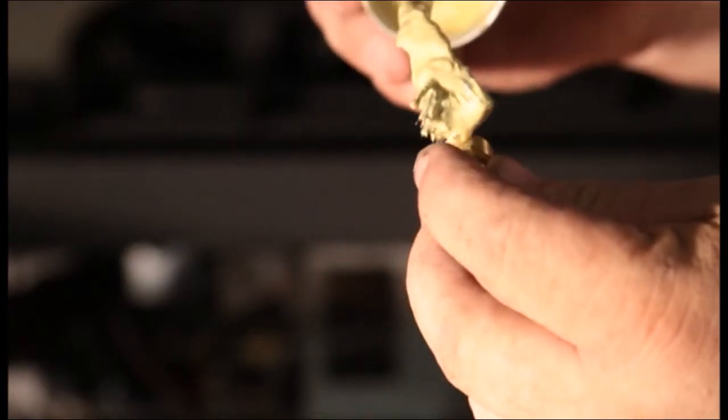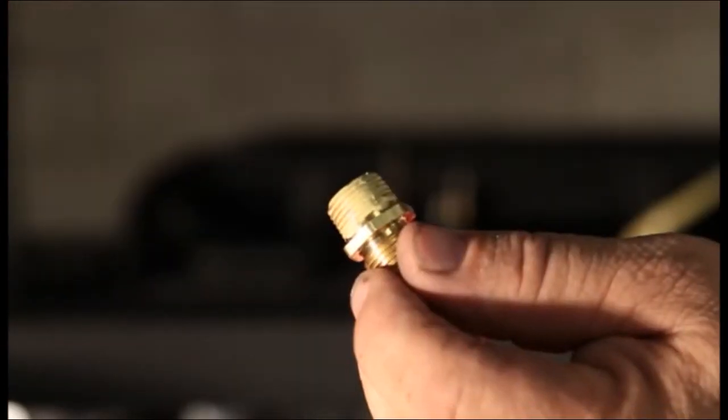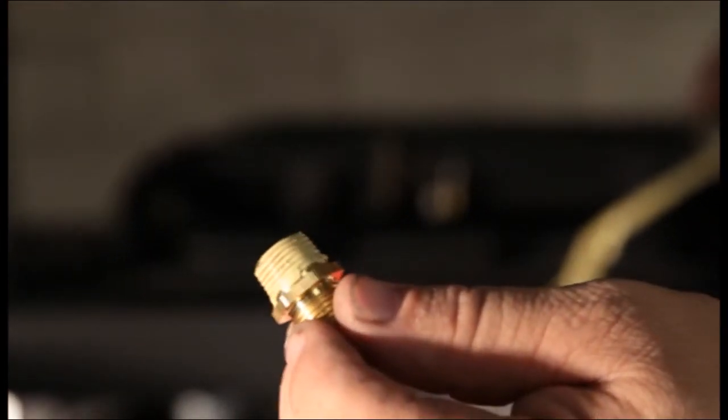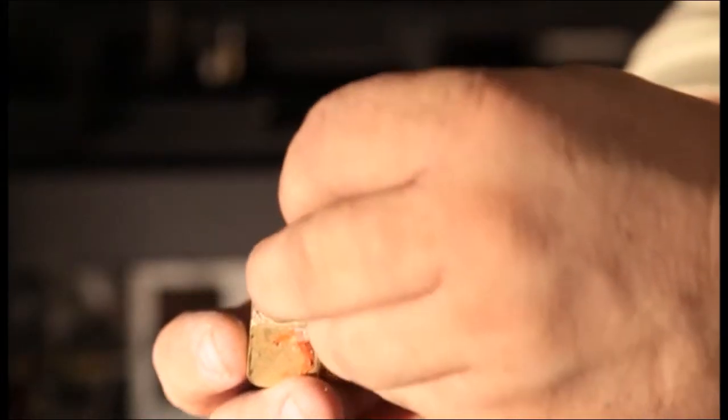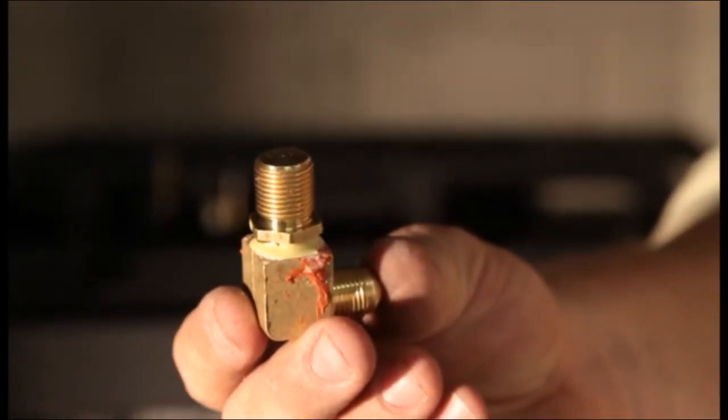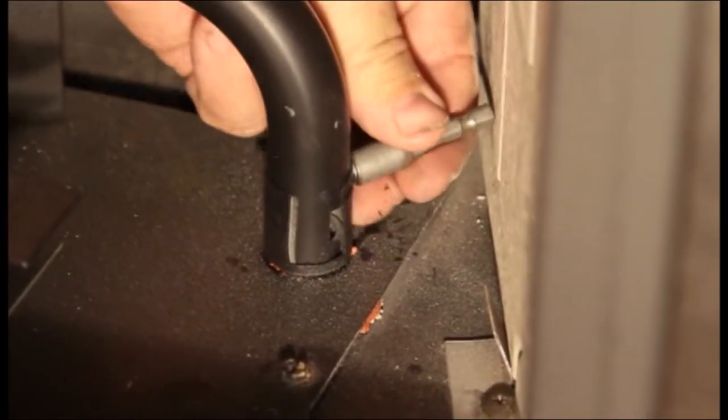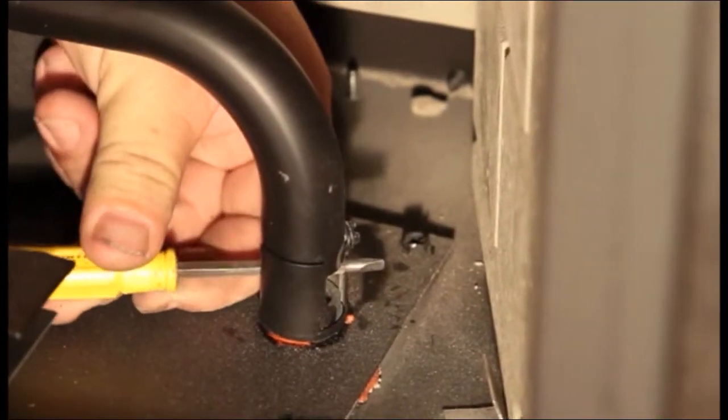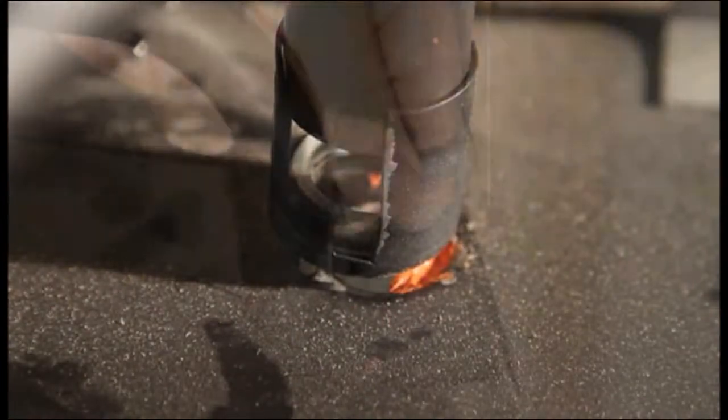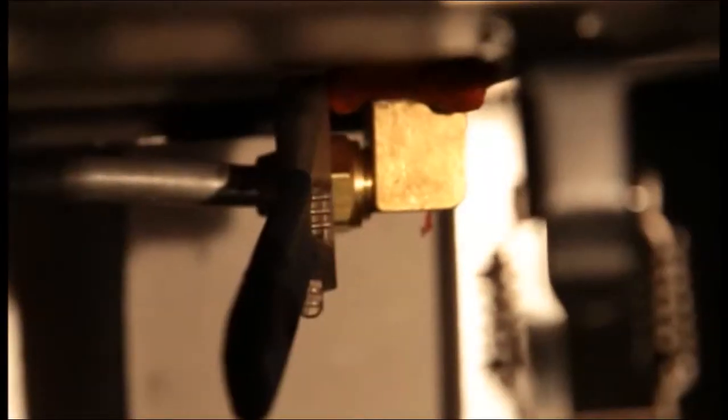Apply a light amount of thread sealant to the bottom threads of the LP orifice. Replace the new LP orifice to the brass elbow. Adjust the air shutter to fully open. Reinstall in reverse order.